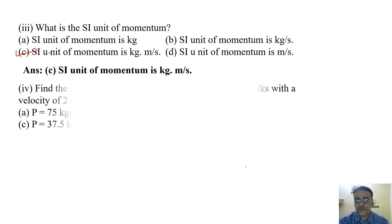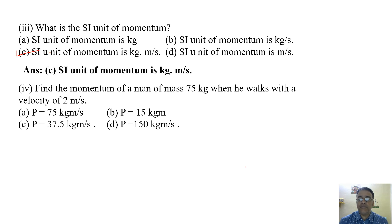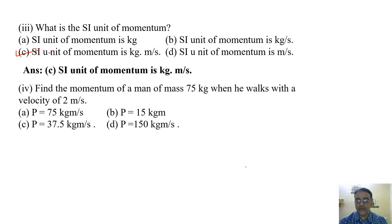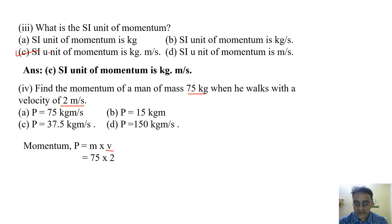Now the fourth question: find the momentum of a man of mass 75 kg when he walks with a velocity of 2 meter per second. Using the formula P = M × V, mass is 75 kg and velocity is 2 m/s. Substituting the values: 75 × 2 = 150. So the momentum is 150 kg meter per second, and the correct option is D.